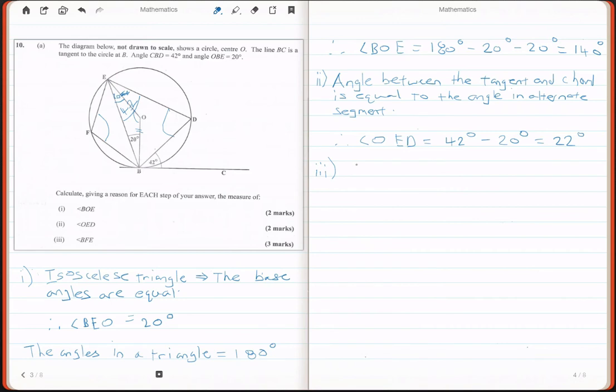The first rule I'm going to use is that angle at center is equal to twice the angle at the circumference. That is saying that this angle that we worked out earlier to be 140 is twice the size of this angle here. So that means this angle here should be 70 degrees.